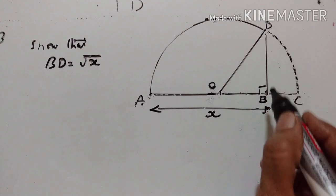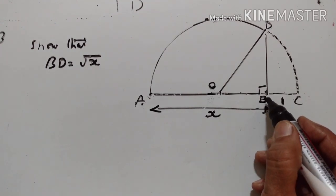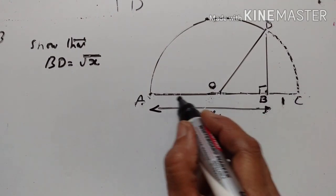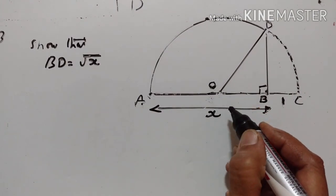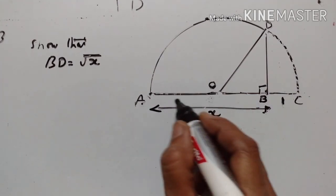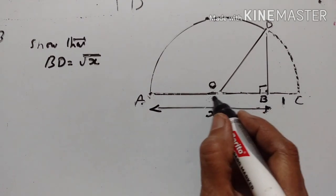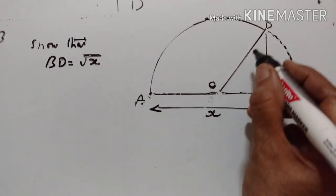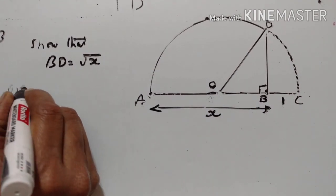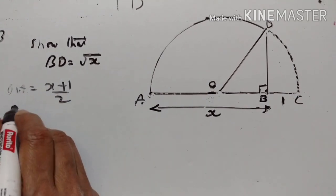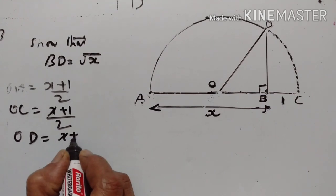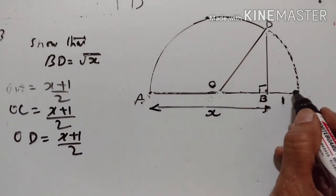In this diagram we have to show that BD equals the square root of x, where AB equals x. The diameter of the semicircle equals x plus 1, and O is the center of the semicircle. So the radii OA, OC, and OD are all equal to x plus 1 upon 2.